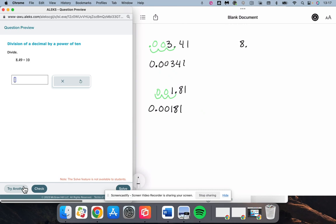We have 8.49 divided by 10. We have 1 zero, so the decimal needs to go one spot to the left. That's going to give us 0.849.